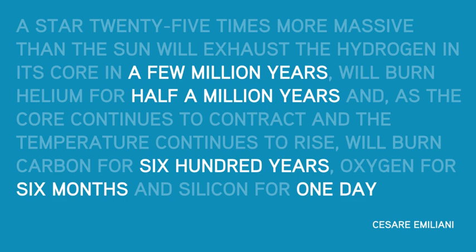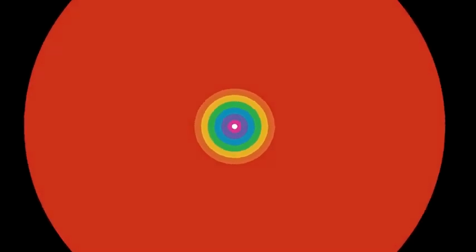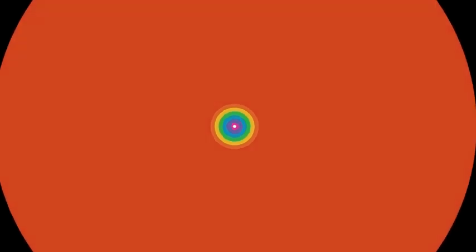By this time the center of the star is like a sort of layer cake with all these different elements and eventually when it fills up with iron it can't go any further. It'll collapse, it'll scatter its outer layers into space and so they'll spread around the star into nearby space all the elements that it's just created.